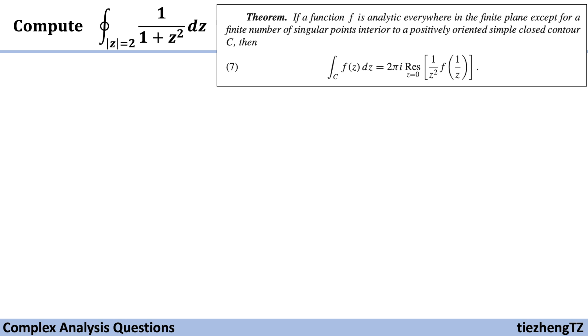Now let's take a look at our question. We have f(z) = 1/(1+z²). This function is analytic everywhere except at these two points, ±i.